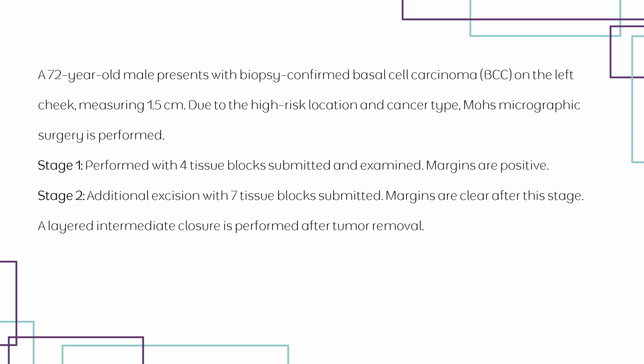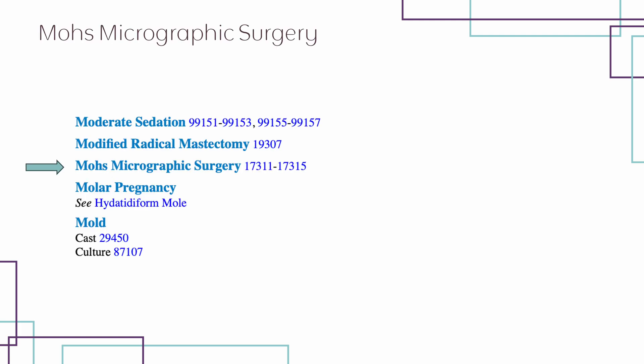The first step is to locate the CPT code. The procedure performed is a Mohs micrographic procedure. Looking at the alphabetic index under Mohs micrographic surgery, there are no additional options — it sends us straight to codes 17311 through 17315.